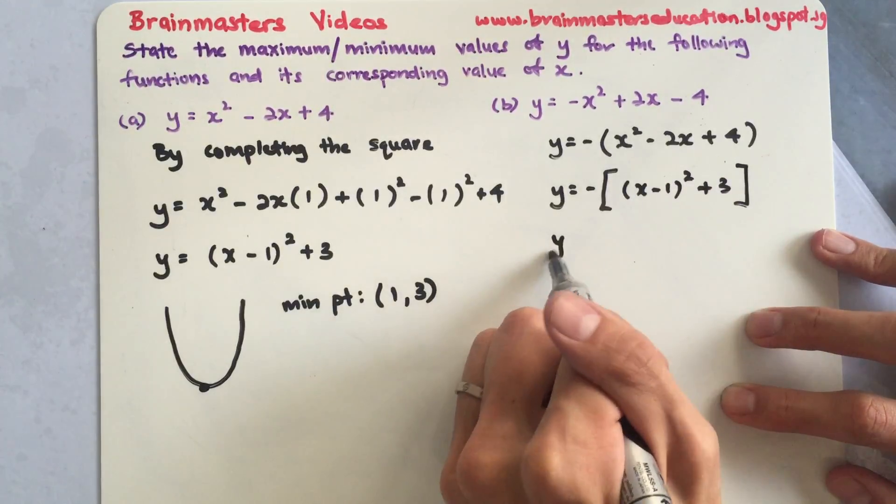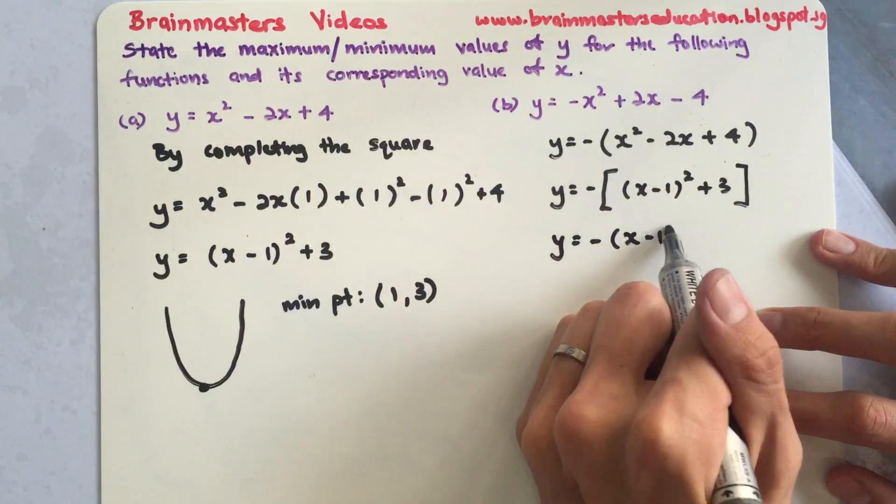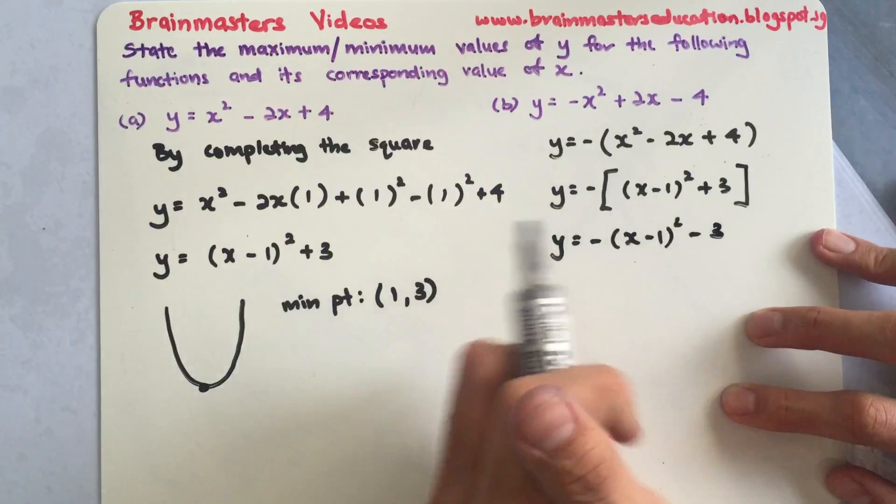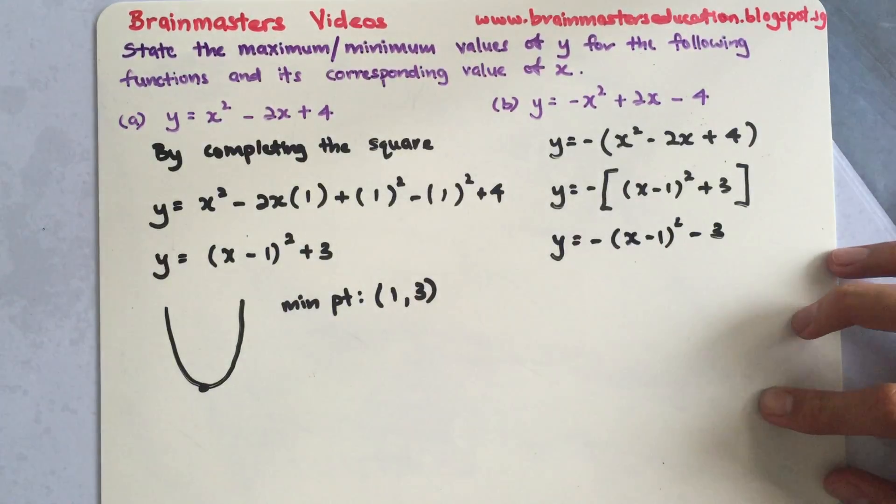I'll expand the negative in, so I have negative (x minus 1)² minus 3. This is the graph based on the equation for part b.